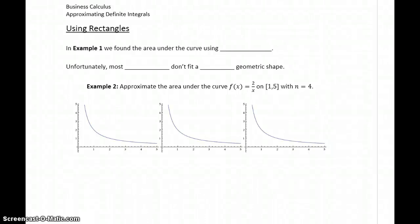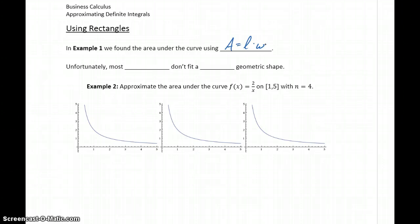In example 1, we were able to find the area under the curve using the formula: area equals length times width. Since that straight horizontal line formed a rectangular region, that basic geometric formula worked. Unfortunately, most curves won't fit to one of our nice geometric patterns or shapes.